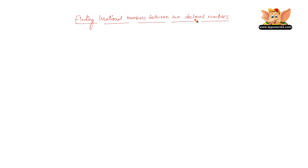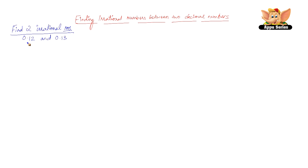Let's learn how to find irrational numbers between two decimal numbers using an example. Let us consider the numbers 0.12 and 0.13, taking A as 0.12 and B as 0.13. We can clearly see that 0.12 and 0.13 are both rational numbers and A is less than B. So we need to find two irrational numbers between 0.12 and 0.13.